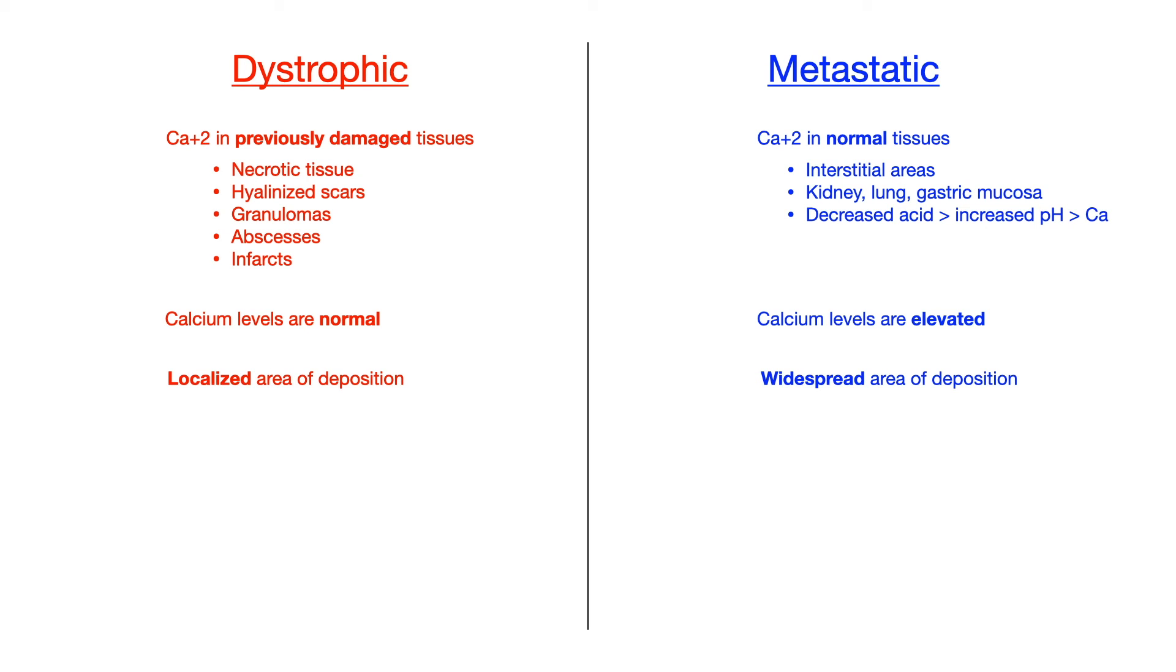In dystrophic calcification, the area of deposition is localized, where in metastatic calcification, the area of deposition is widespread.